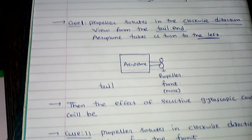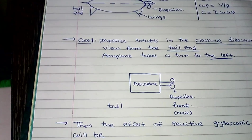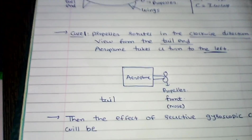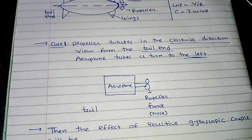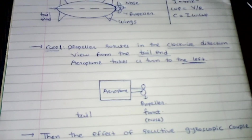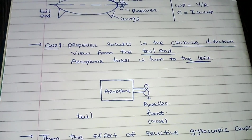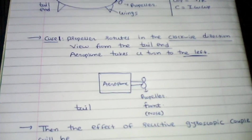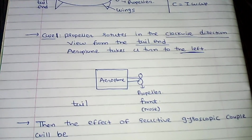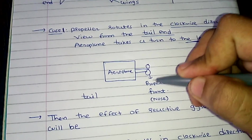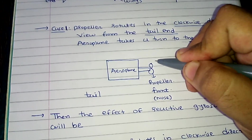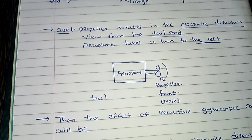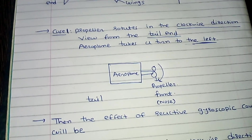First we draw one rectangular box representing the aeroplane and one propeller. We use the first condition: propeller rotates in the clockwise direction. So make one arrow in the clockwise direction.